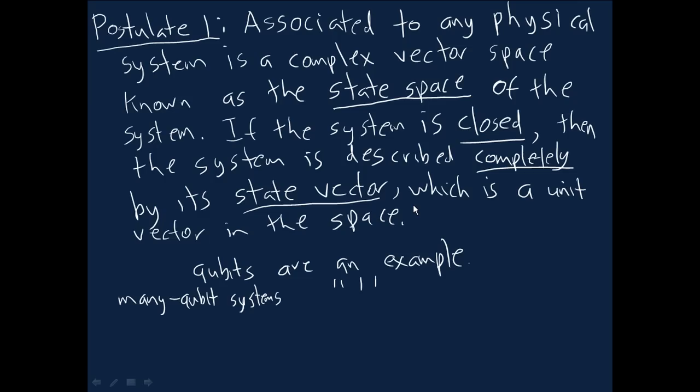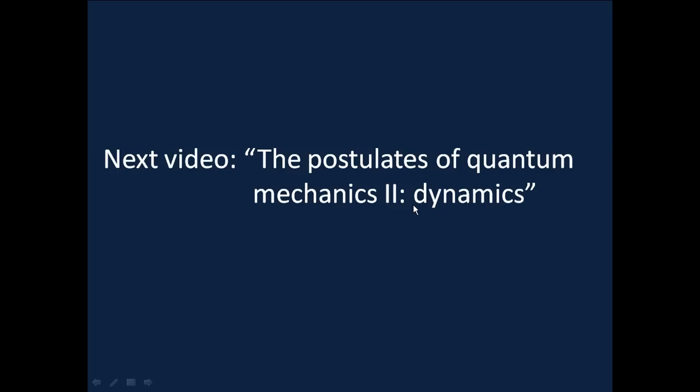But we'll just take this for granted and work with it for now. It's not difficult, actually, later on to understand why that's the case, but it would take us a bit too far afield. Okay, that's postulate one. We now know what we need to know about postulate one. In the next video, we're going to see postulate two in the postulates of quantum mechanics, and that's all about how you describe the dynamics of a quantum system.